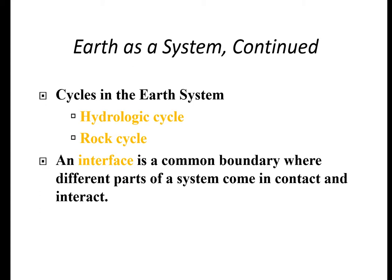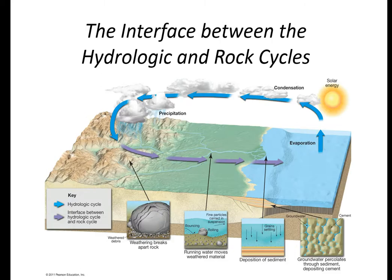There is an interface between the hydrological cycle and the rock cycle where different parts of the system come into contact and interact. Water evaporates out of the ocean, goes into clouds and condenses, then rains down filling lakes and rivers, which drain back into the oceans. During this cycle, we weather rocks by the action of water and friction, deposit sediment, and the whole process continues over again.